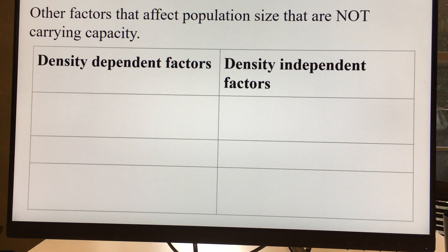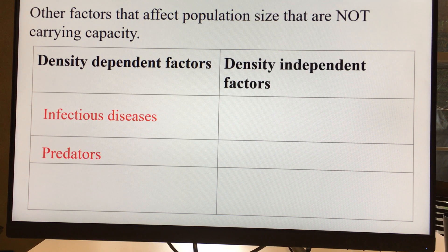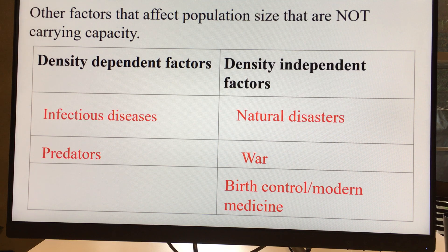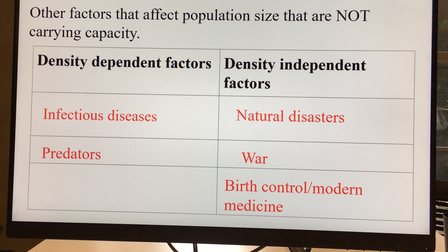Some factors affecting population size include infectious diseases, predators, natural disasters, war, and birth control and modern medicine. Infectious diseases are density dependent because in a very densely populated area diseases spread more quickly. Predators are also density dependent — they're attracted to densely populated areas, though if you're prey in a dense population you're actually less likely to get eaten because there are more of you.